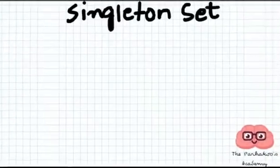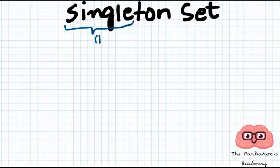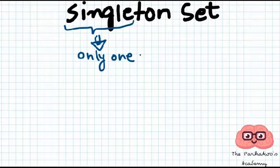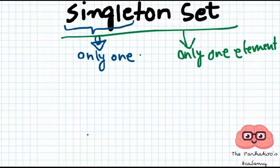Okay, so this video is about another type of set which is the singleton set. Let's first break this term. Single means only one, so singleton sets are such sets which contain only one element.